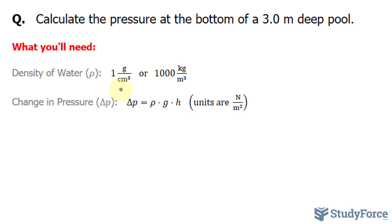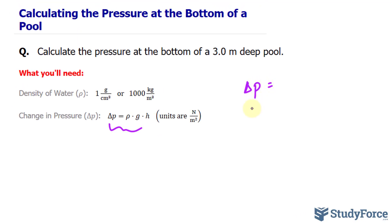You'll need this value so that you can plug it into this formula, which calculates the change in pressure. So what we will do is we'll write down delta P for the change in pressure. And this represents the pressure that's at the bottom minus the pressure that's at the top.